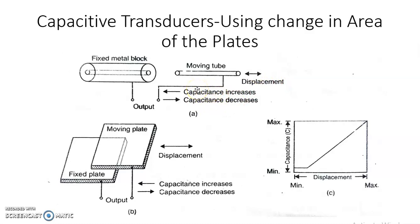Similarly, as the moving tube is taken out, the capacitance decreases and accordingly the displacement can be measured. The magnitude of displacement is directly proportional to the magnitude of capacitance change, and the direction of displacement is indicated by whether the capacitance is increasing or decreasing. Similarly, with parallel plates, when the moving plate slides over the fixed plate the capacitance increases, and when moved away it decreases.